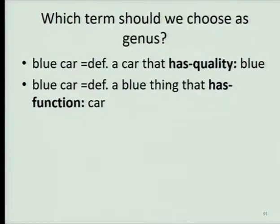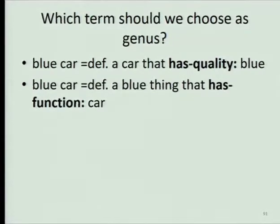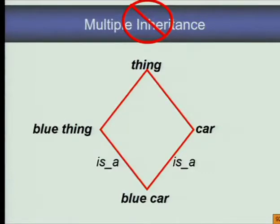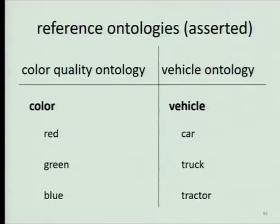We've already raised this issue in connection with multiple inheritance. When we come to define something not already in our ontology, we may not know what the appropriate parent term is. We want to use the definitional process to help us decide which parent term to use. Let's suppose we are creating an automobile ontology and someone says we need the term 'blue car' in our ontology. The correct response is to say don't — but if he is our boss, we have three choices: a blue car is a blue thing, or a blue car is a car, which is the correct choice, or we need both and then we have multiple inheritance. But neither of those is actually very good.